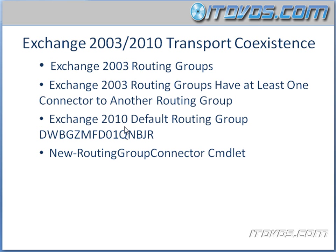We can't move Exchange 2010 servers out of that routing group into another routing group to form an efficient Exchange 2003 to Exchange 2010 routing topology. So if we have a lot of sites and a lot of Exchange servers, we will most likely have an inefficient routing topology. If we only have one or two sites, the inefficiency probably won't matter too much.